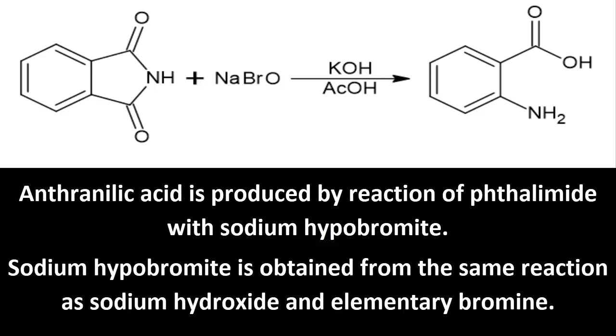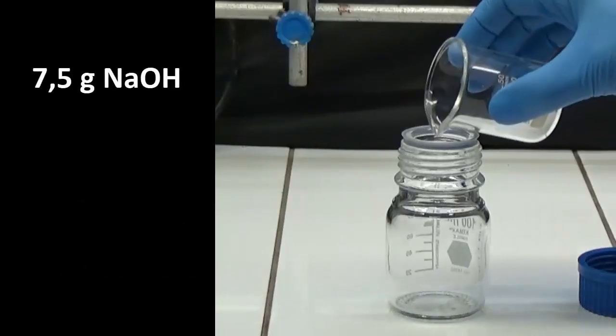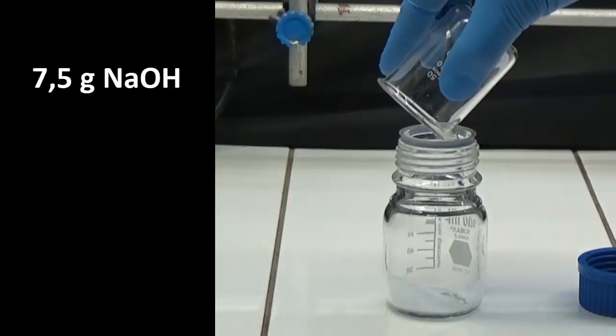Sodium hypobromite is obtained from the reaction of sodium hydroxide and elementary bromine. To obtain anthranilic acid, you must first prepare a sodium hydroxide solution.